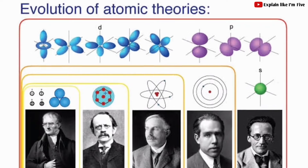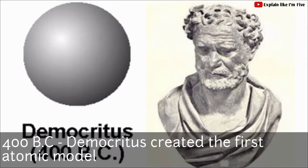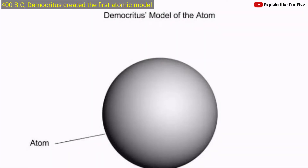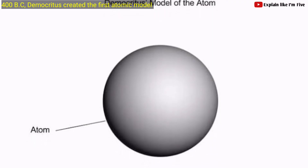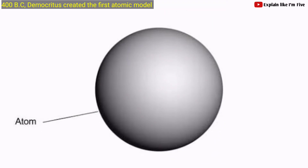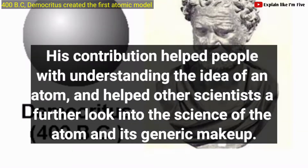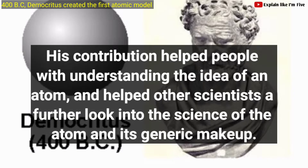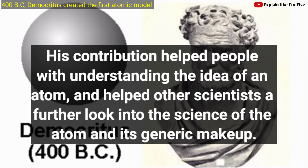The evolution of the atomic model all started in 400 BC when Democritus created the first atomic model — a round sphere with no electrons, protons, or neutrons. His contribution helped people understand the idea of an atom and helped other scientists take a further look into the science of the atom and its generic makeup.